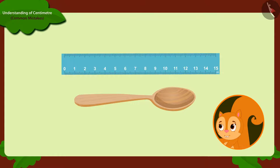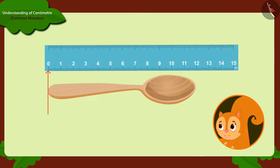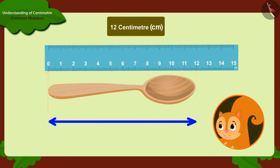Chanda realized her mistake and measured the spoon from number 0. And this time, she got the length of the spoon exactly 12 centimeters as before.